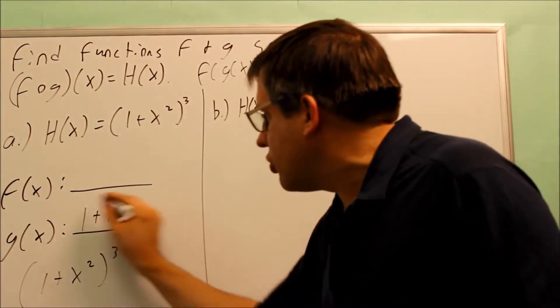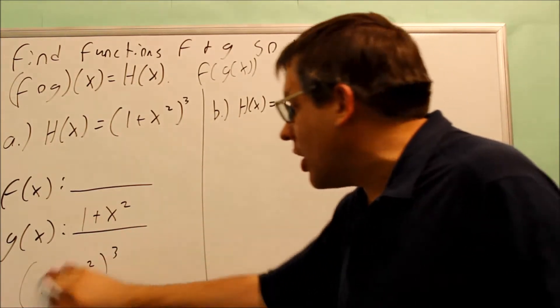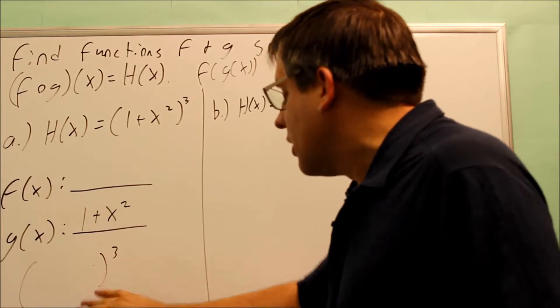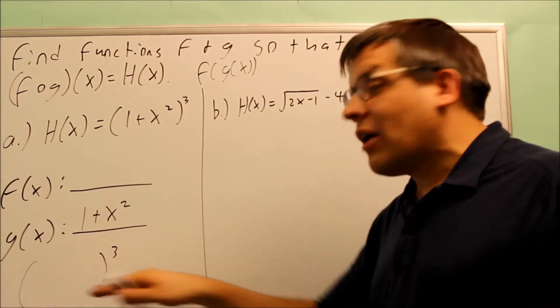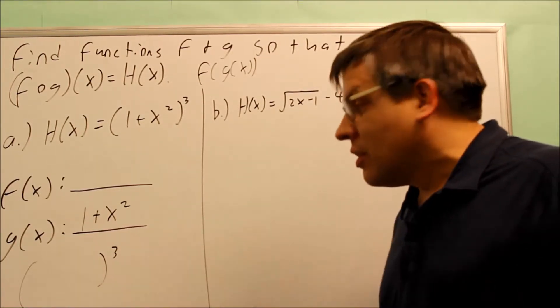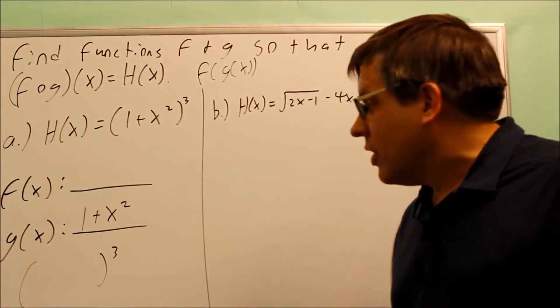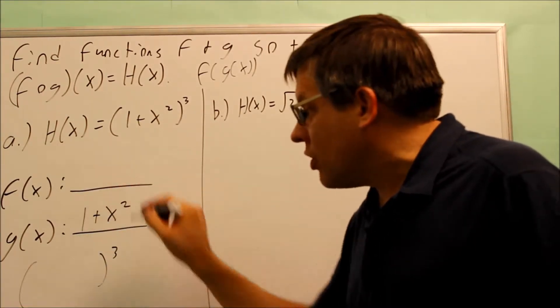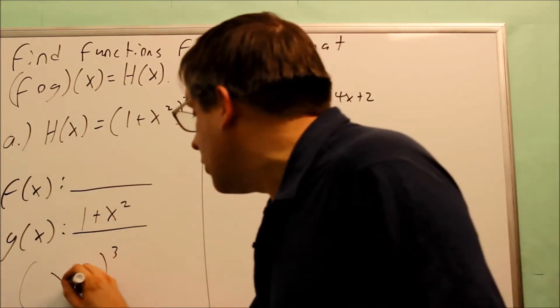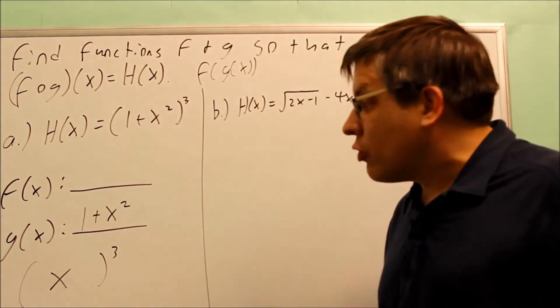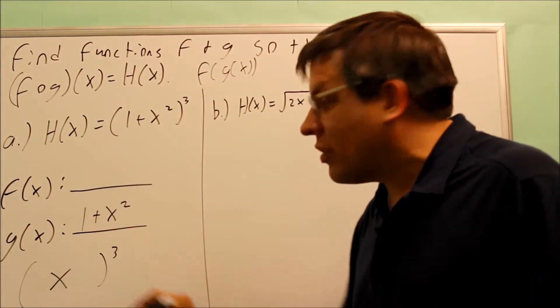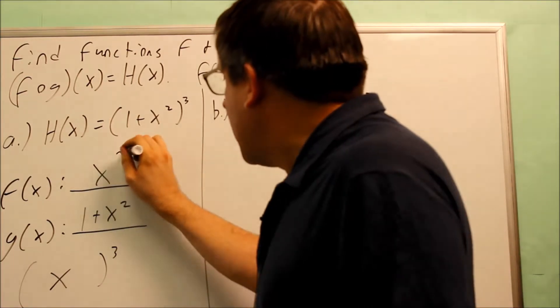What I'm going to do is I'm going to remove the g of x that I already indicated. Now I have a blank—something raised to the third power. The blank, instead of filling it in with g of x, I'm going to go back to my original x. I'm going to replace the g inside with x. So therefore my f of x is equal to x to the third power.